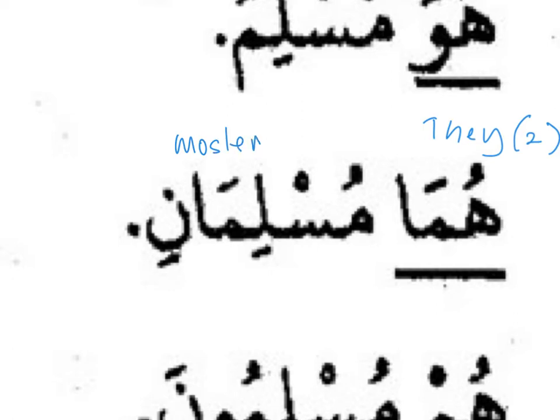The second example: 'huma muslimani.' This sentence is similar to the first, meaning 'they are Muslim,' but the difference is the number. Huma refers to two people — both of them. So both of them are Muslim. The word muslimani is in the muthanna (dual) form due to the alif and nun at the end. Muslimani is also muzakkar, therefore the word to use is huma — 'huma muslimani.'